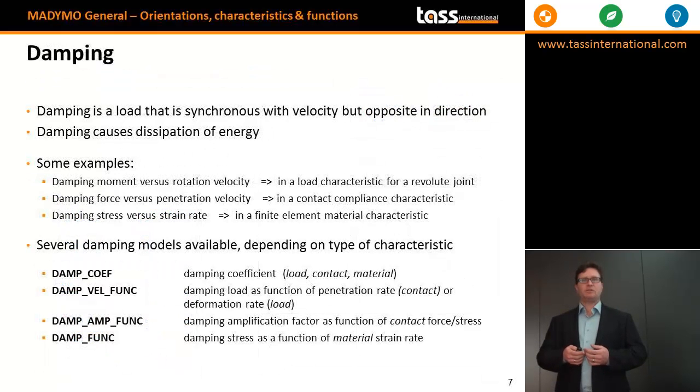Damping can be specified through several attributes in the characteristics. Damping itself is a dissipative force in the analysis and may represent a damping moment as a function of rotation velocity, for example, in a characteristic of a revolute joint.